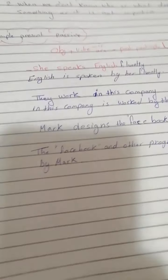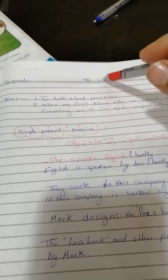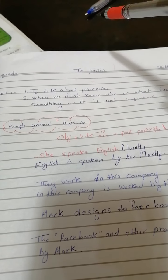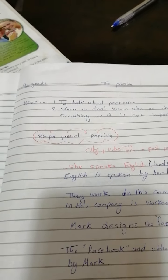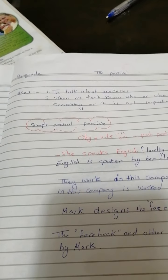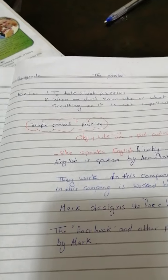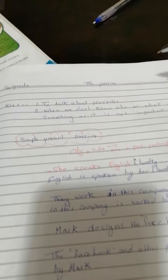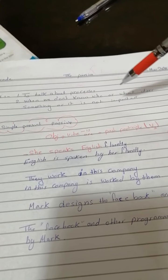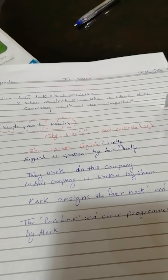Hello and welcome, ninth grade. Today we will discuss the passive voice. If you don't know who or what does something, or it is not important to know who is doing something, we use the passive. There is no subject — we don't know the subject of the action. We use it to talk about processes or when we don't know who does something.